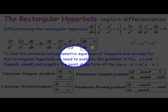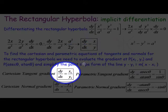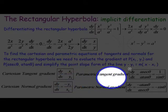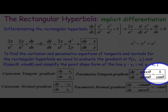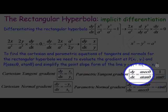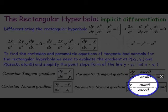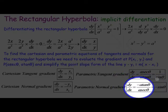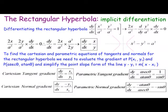That gives us the Cartesian gradient, and the normal uses the negative reciprocal. For the parametric form, the parametric gradient is sec theta on tan theta for dy/dx — or you can use dy/dθ over dx/dθ to derive it.